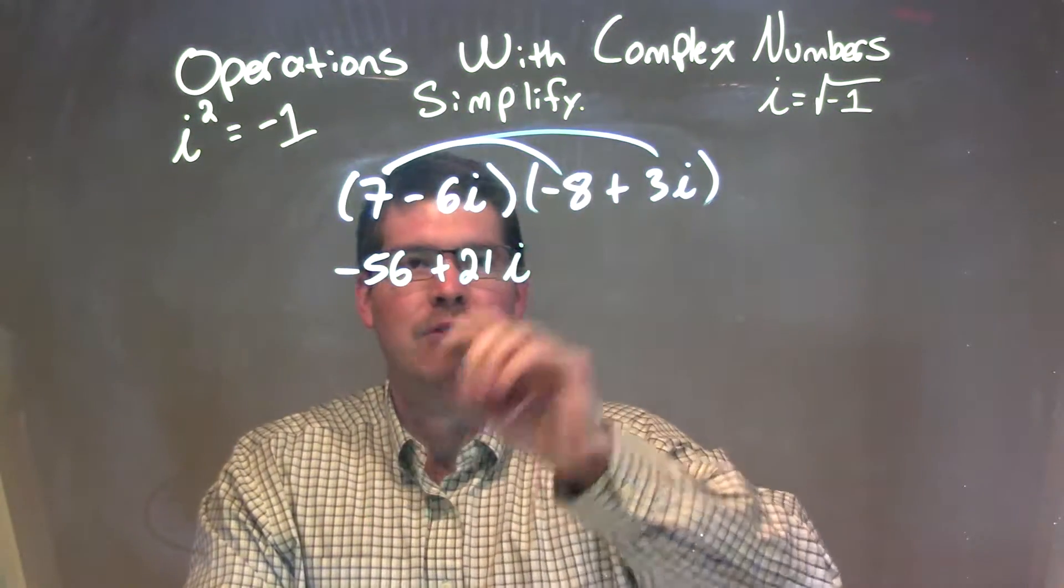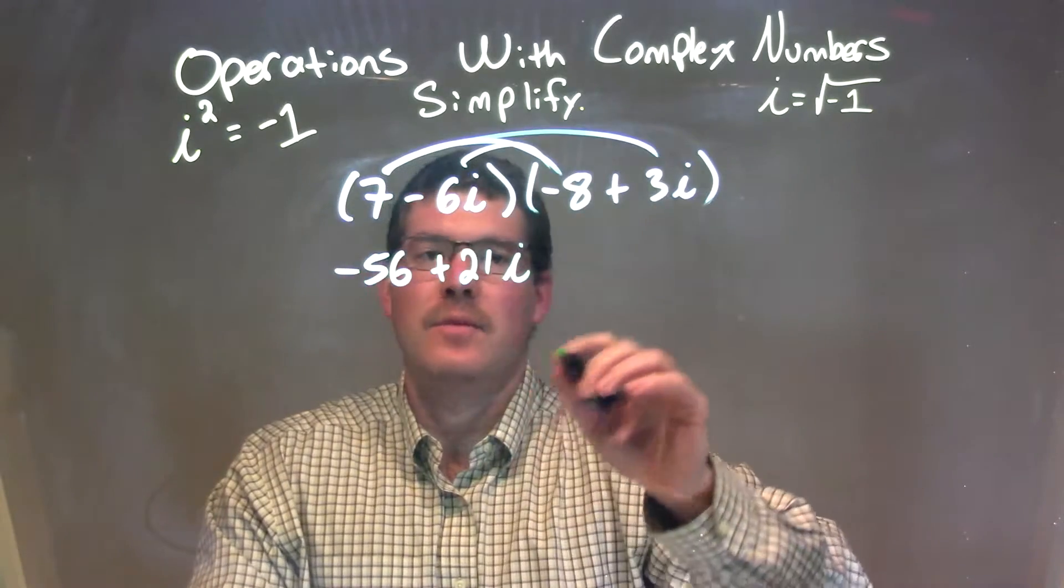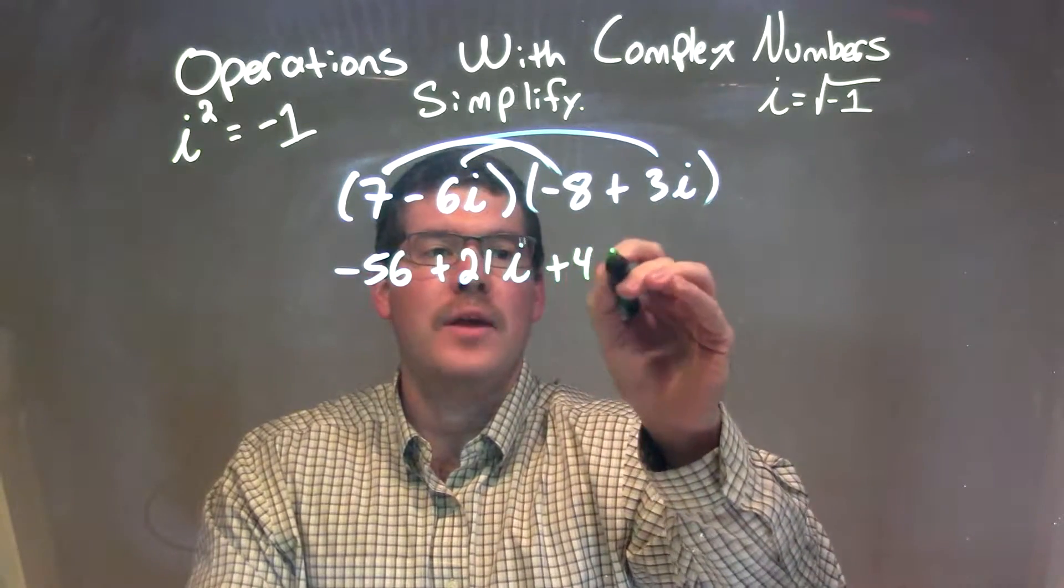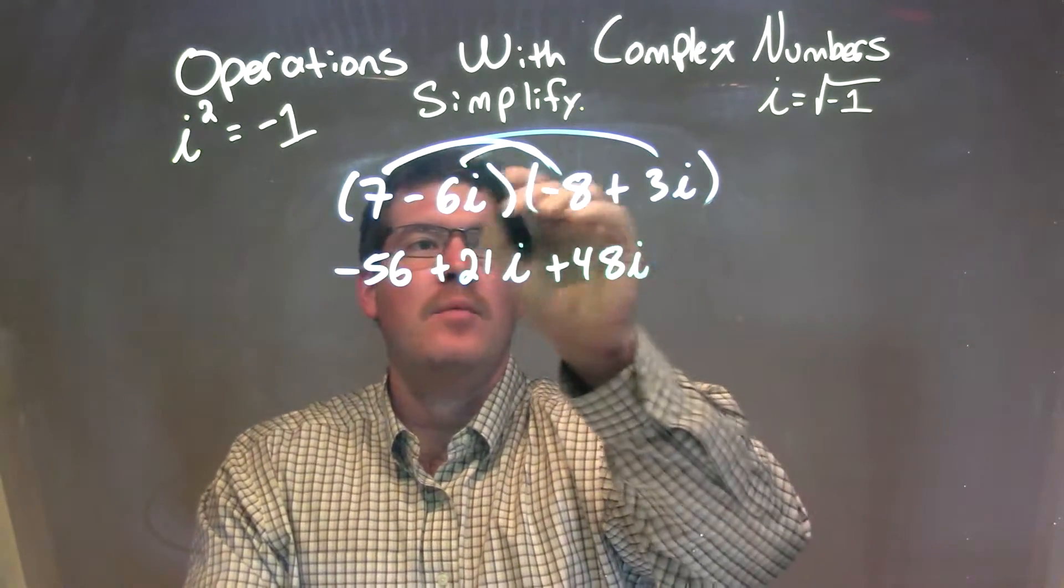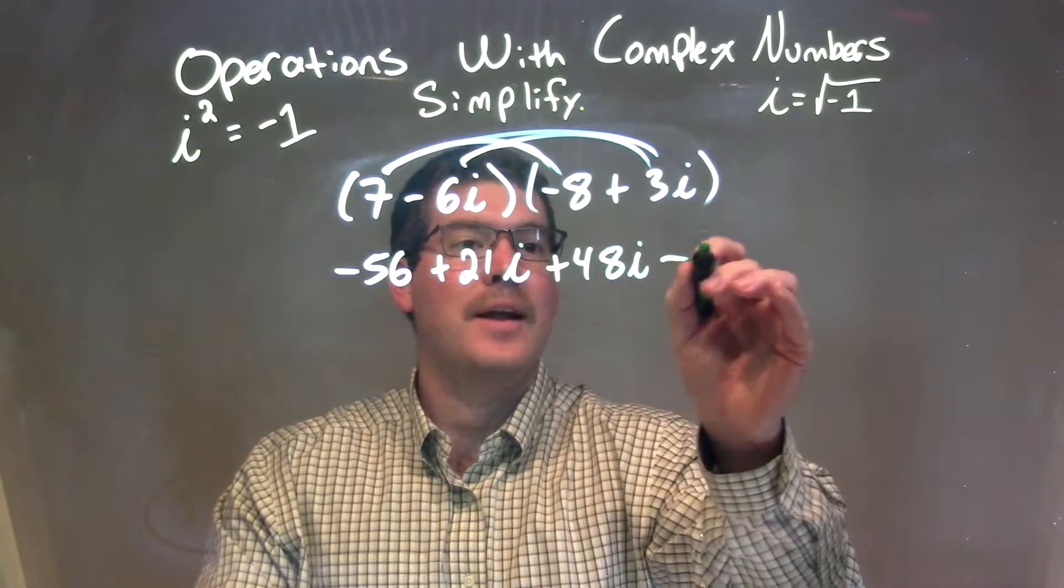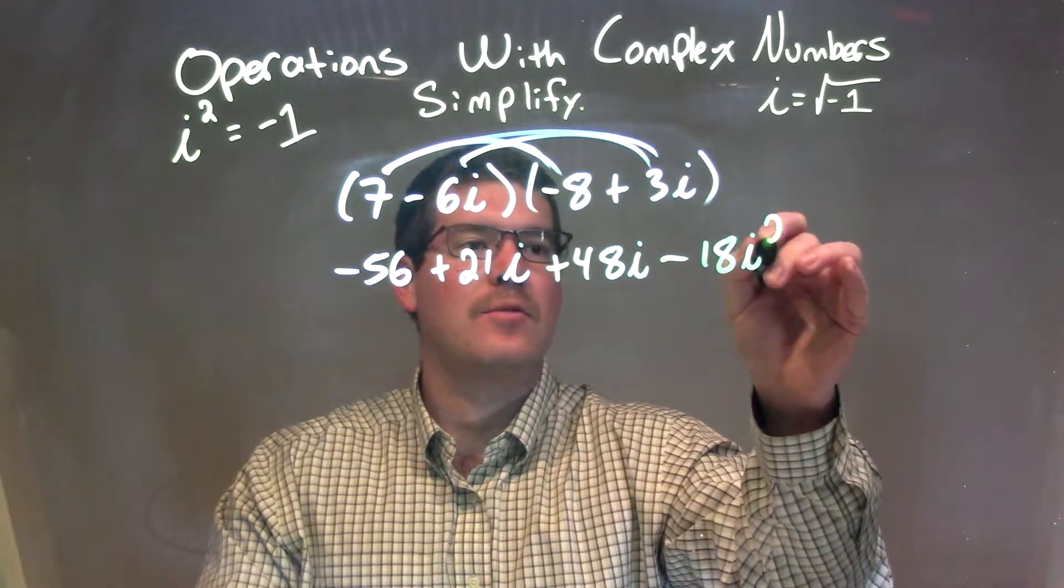Now let's do it with the minus 6i. Minus 6i times minus 8 is positive 48i, and minus 6i times 3i is minus 18i squared.